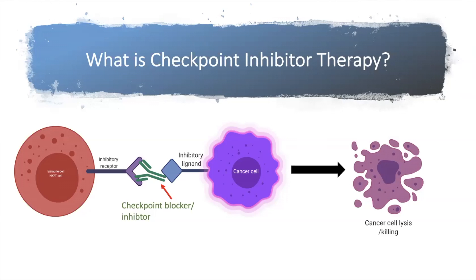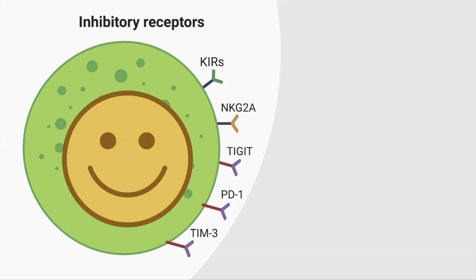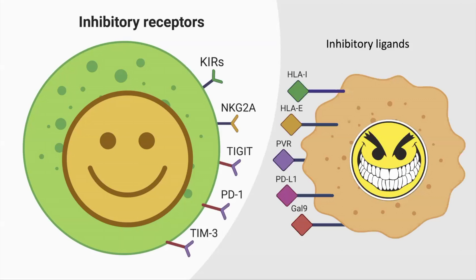It is important to know that there are many checkpoint receptors expressed on immune cells. For example, PD-1, NKG2A, KIRs, TIM-3, etc. Each one of these receptors has its own specific ligand that binds to it, which is expressed by the cancer cell.